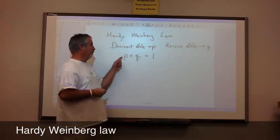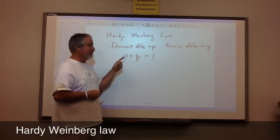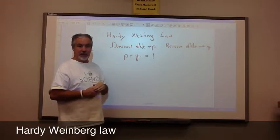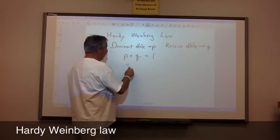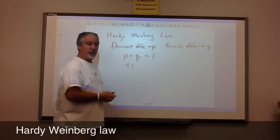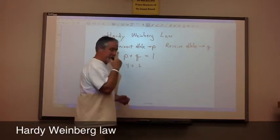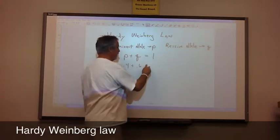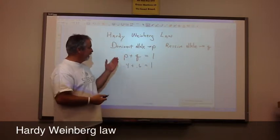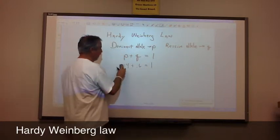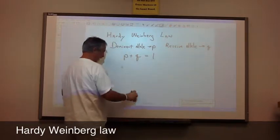So we're going to say the frequency of P plus the frequency of Q has to equal everybody or 1. This would be like if there were 40% P genes out there and 60% Q genes, we would write it as 0.4 plus 0.6 equals one. So this is just a representation of how many people out there have each.